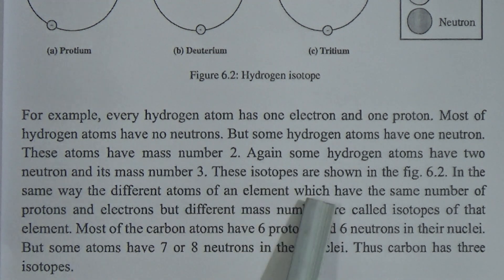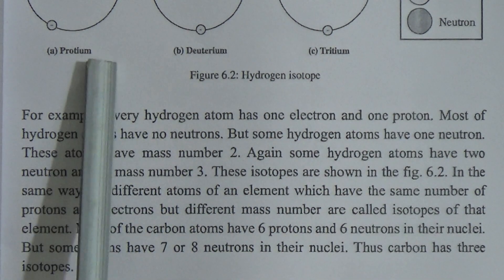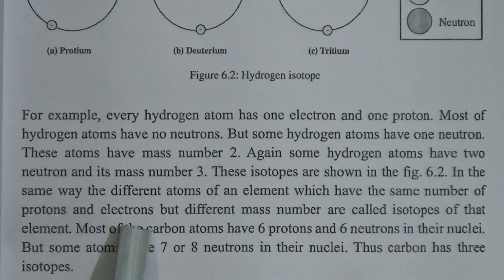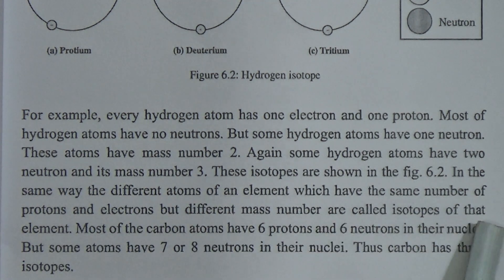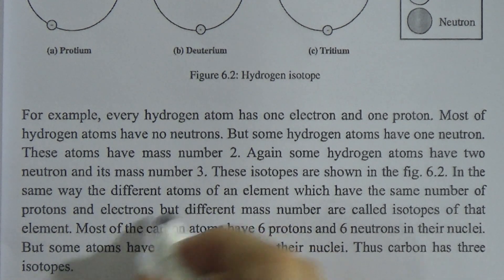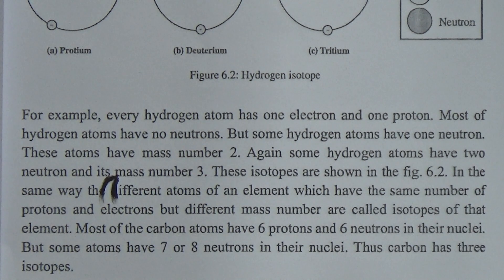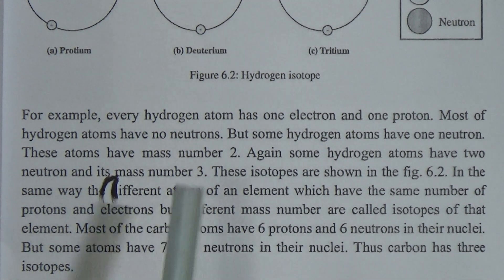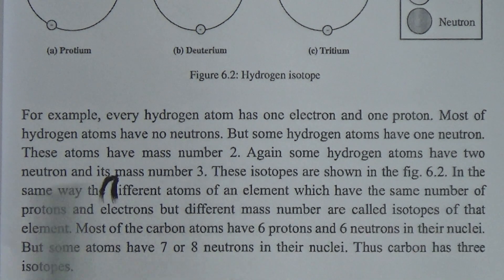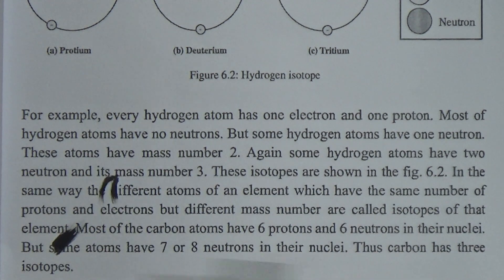Some hydrogen atoms have two neutrons and their mass number is three. These isotopes are shown in the figure. The different atoms of an element which have the same number of protons and electrons but different mass numbers are called isotopes. From here we can memorize the definition of isotopes: atoms which have the same number of protons and electrons but a different mass number are called isotopes of that element.